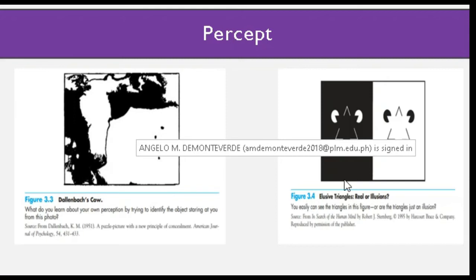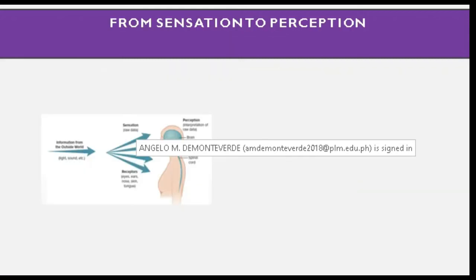From sensation to perception: the simple act of interpreting sound vibrations entering your ears as someone calling your name is a complex process involving both sensory organs and the brain. The sense organs transform information from its physical form — such as light, sound waves, or chemicals — into nerve impulses and transmit them to the brain, which organizes and interprets the information and initiates a response.